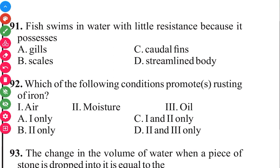Question 92. Which of the following conditions promote rusting of iron? Looking at it, this promotes rusting of iron. This also promotes rusting of iron. So the answer is C.